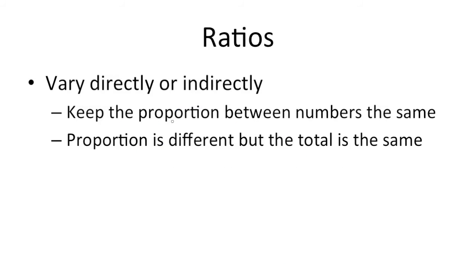So there are two types of ratios you'll deal with. You'll either have direct variation or indirect variation. When things vary directly, you're keeping the proportion between the numbers the same. And when they're varying indirectly, the proportion is different, but you'll want to keep the total the same. The total being a constant.